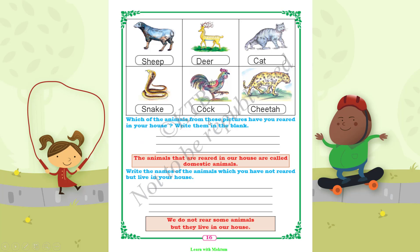Write down which of these animals you have reared in your house. The animals that are reared in our house are called domestic animals. So domestic animals are the animals that are reared in our house.